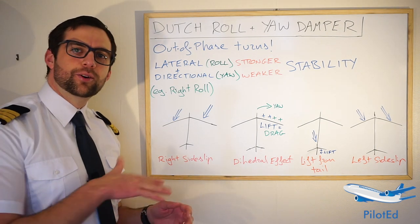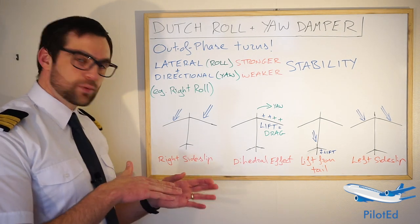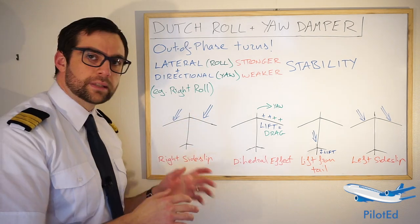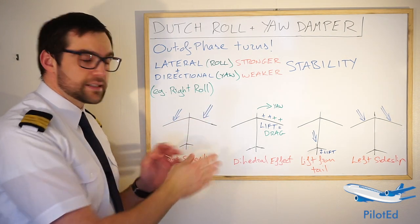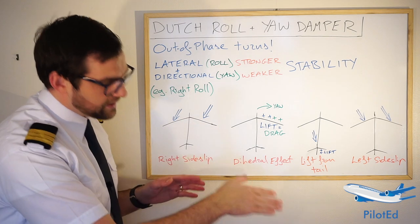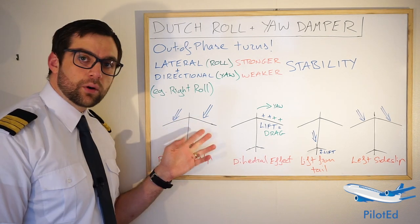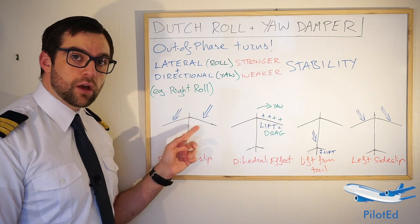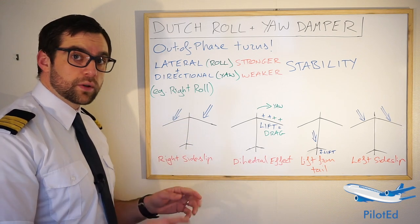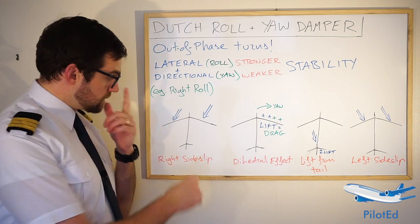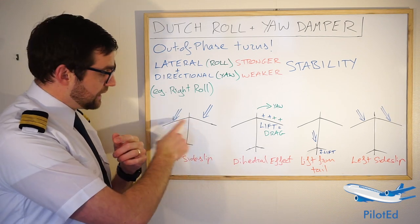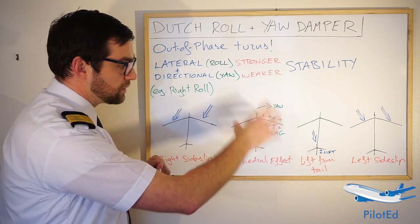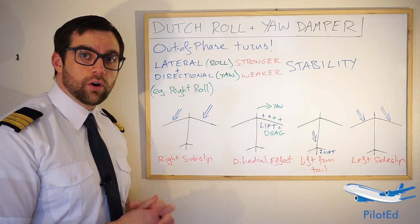Let's say we start an uncoordinated roll to the right. As we roll to the right, our aircraft is actually going to sideslip to the right also. That means our airflow is going to come from the right, because we are sideslipping down into that airflow. On a slightly swept-back wing, the airflow is going to hit the right wing more head-on, generating more lift. So now we have slightly more lift on the right wing than on the left wing.